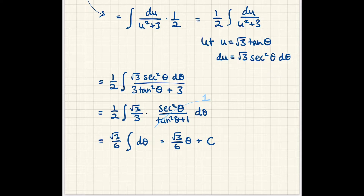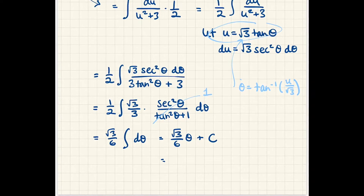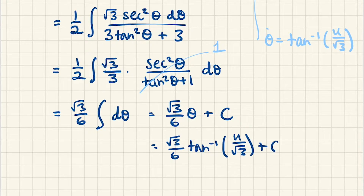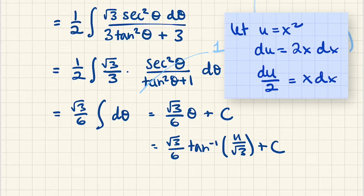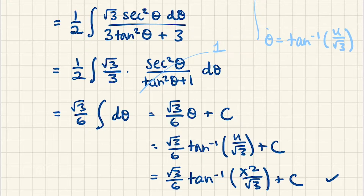Now we roll our thetas backward through the layers of substitution. From our definition, θ equals arctan(u/√3), so this is √3/6 times arctan(u/√3) plus a constant. But u equals x squared, so our last replacement gives us √3/6 · arctan(x²/√3) plus a constant. And we're done.